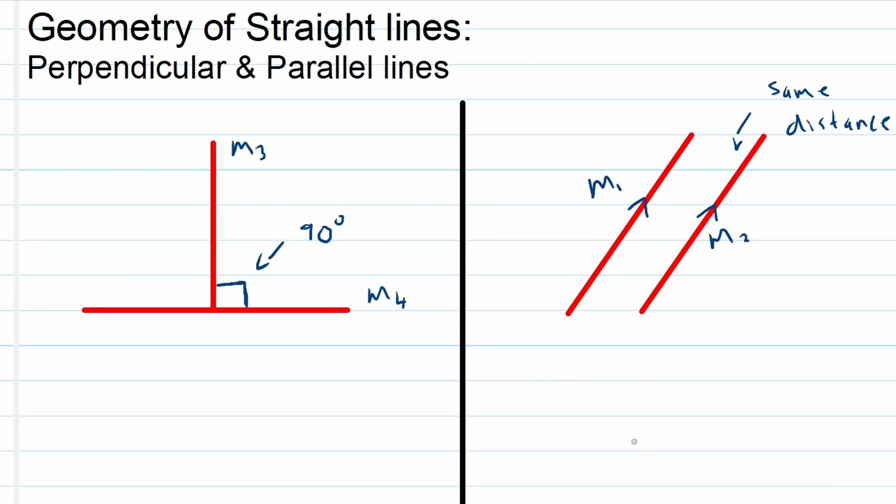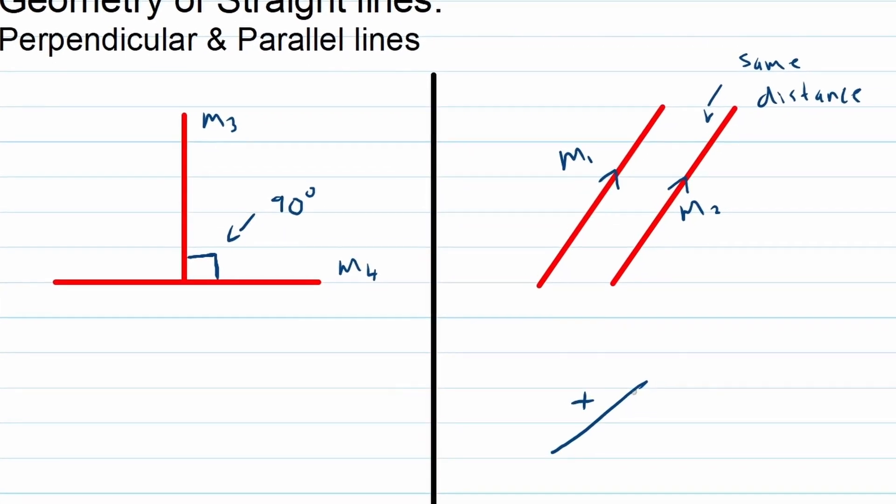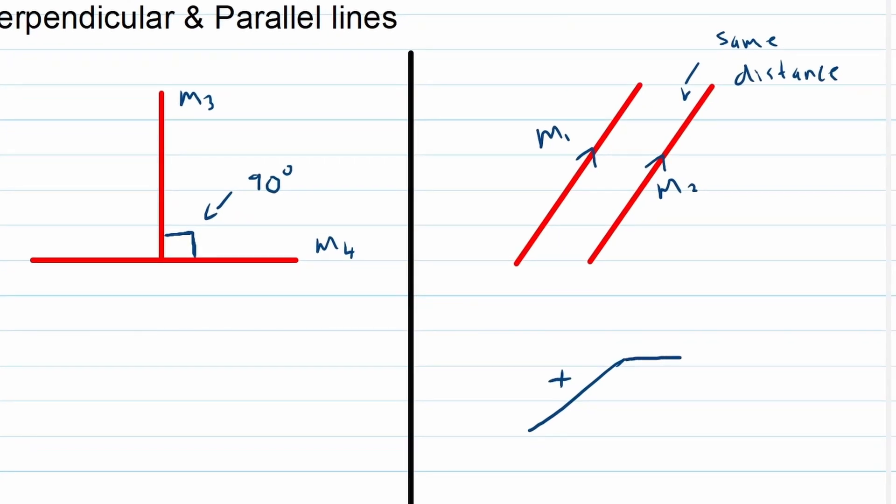If it's going horizontal like this, the slope will be zero. And if it's going down like this from left to right, the slope or gradient will be negative. So this is how we interpret and understand gradients.